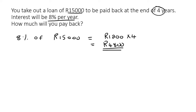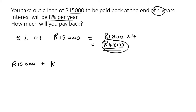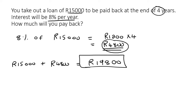So how much do you have to pay back? You have to pay back the original 15,000 rand plus the penalty of 4,800 rand. So you're going to pay back a total of 19,800 rand.